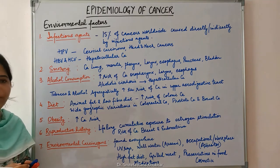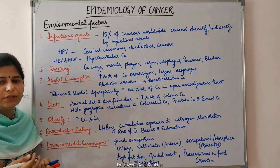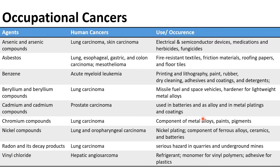Let us see a table of occupational cancers and the responsible agents. Arsenic and arsenic compounds can cause lung carcinoma and skin carcinoma. Asbestos can cause lung, esophageal, gastric and colon carcinoma, and mesothelioma. Benzene causes acute myeloid leukemia. Beryllium and beryllium compounds cause lung carcinoma. Cadmium and cadmium compounds can cause prostate carcinoma. Chromium compounds and nickel compounds cause lung carcinoma; nickel compounds also cause oropharyngeal carcinoma. Radon and its decay products can cause lung carcinoma. Vinyl chloride can cause hepatic angiosarcoma.